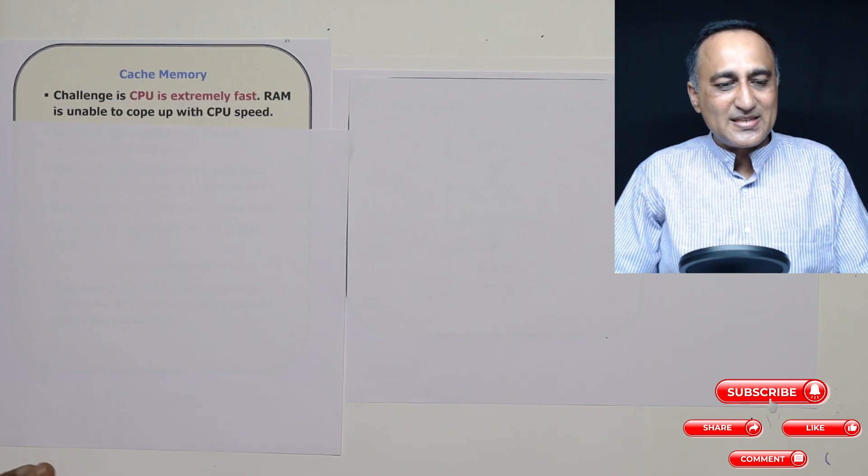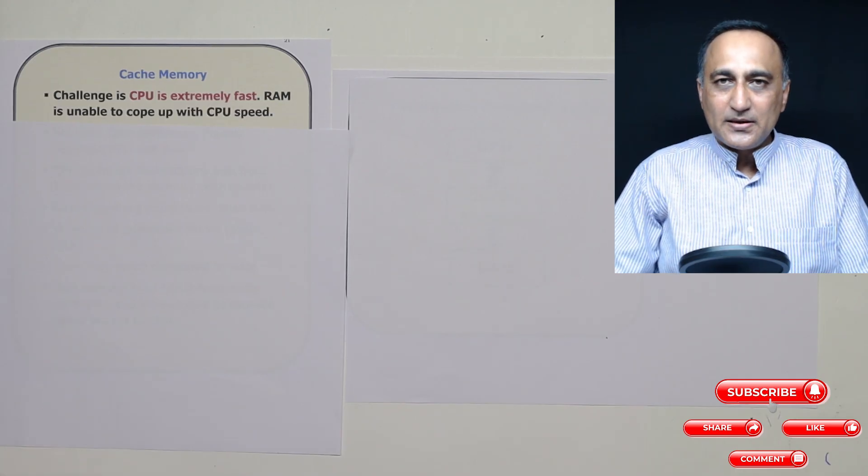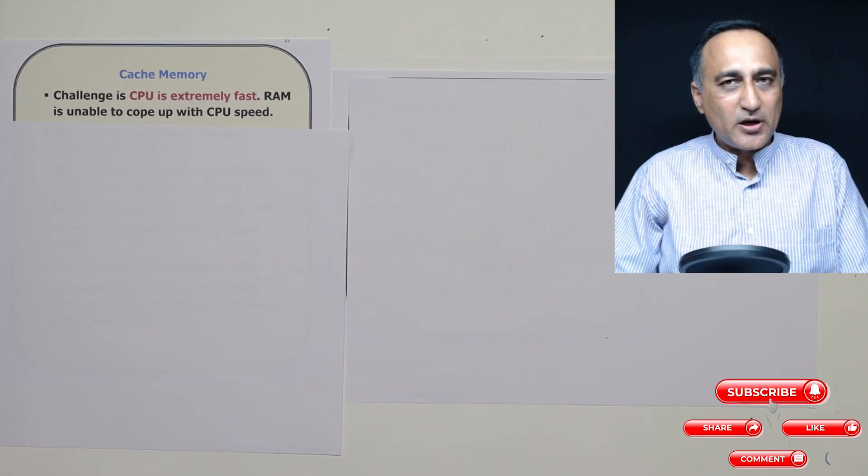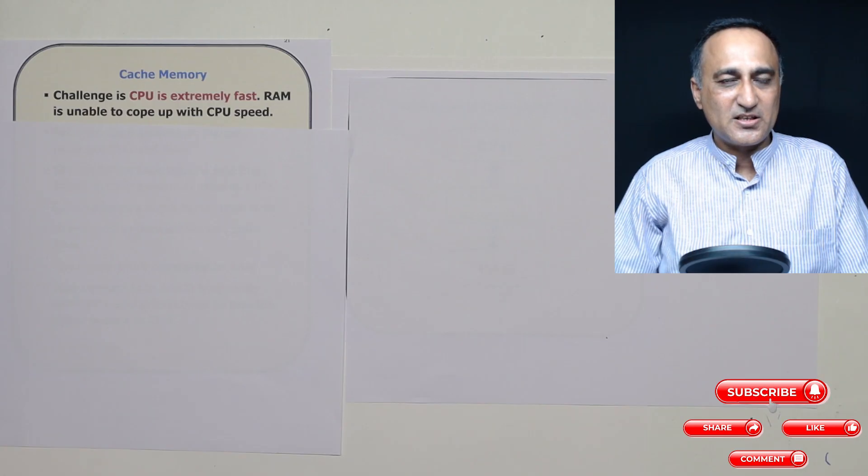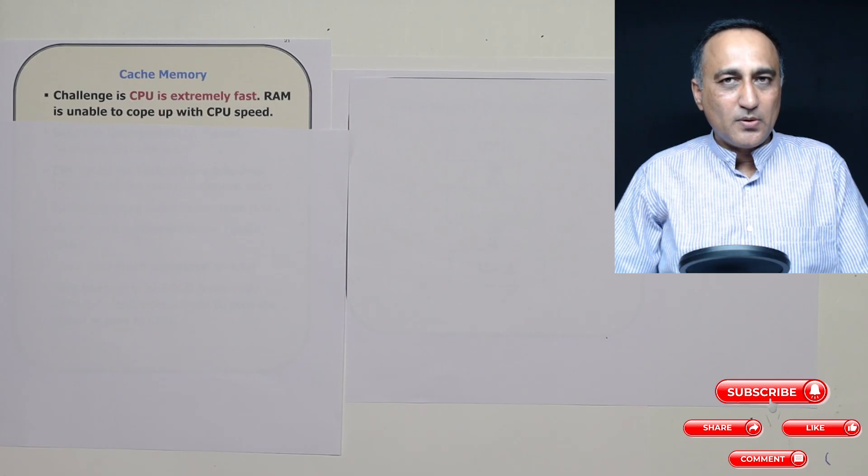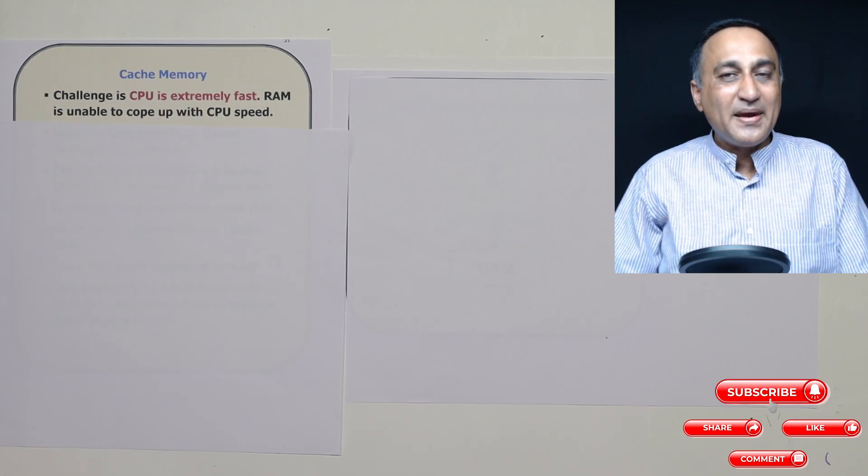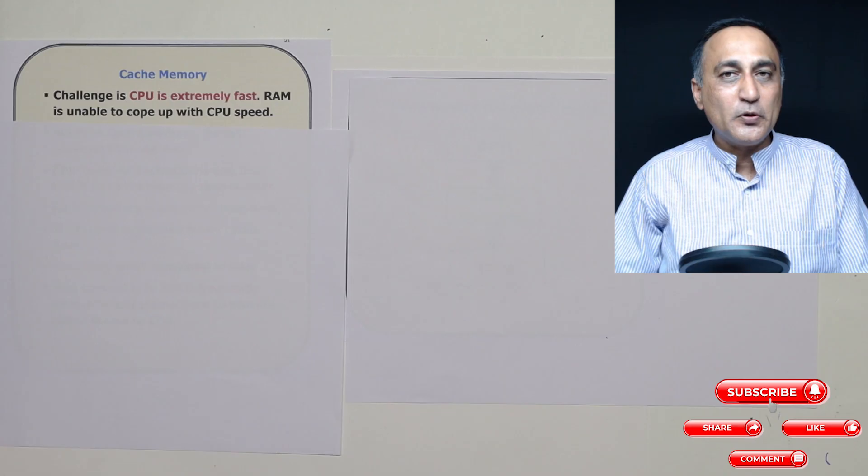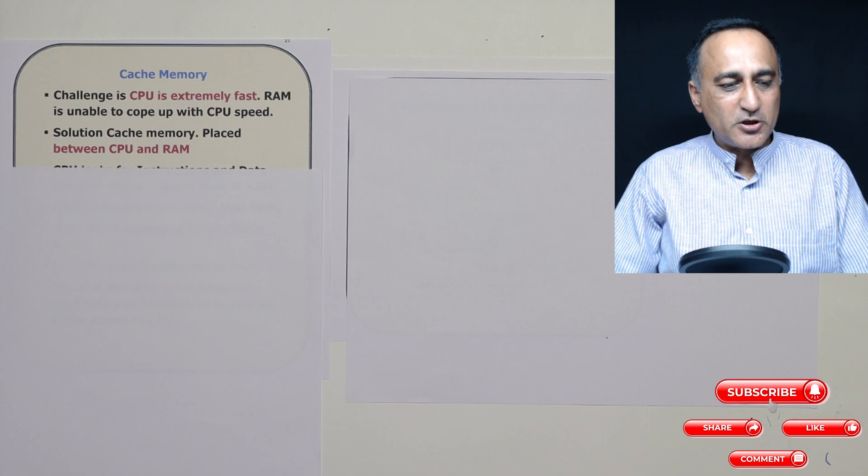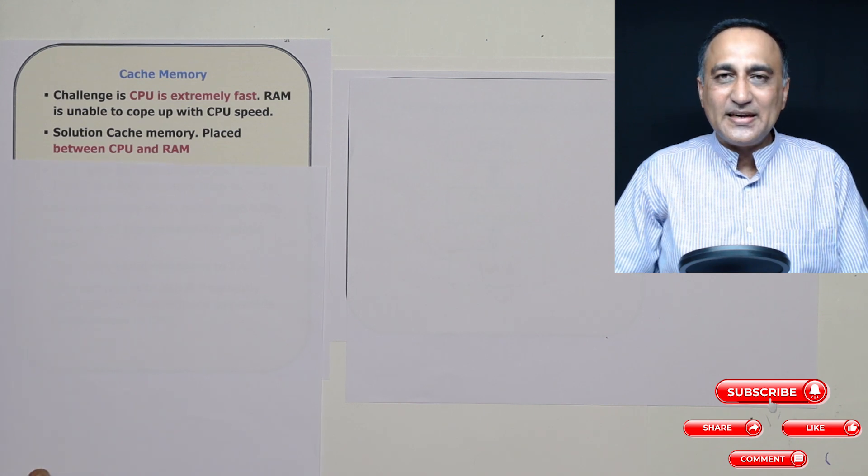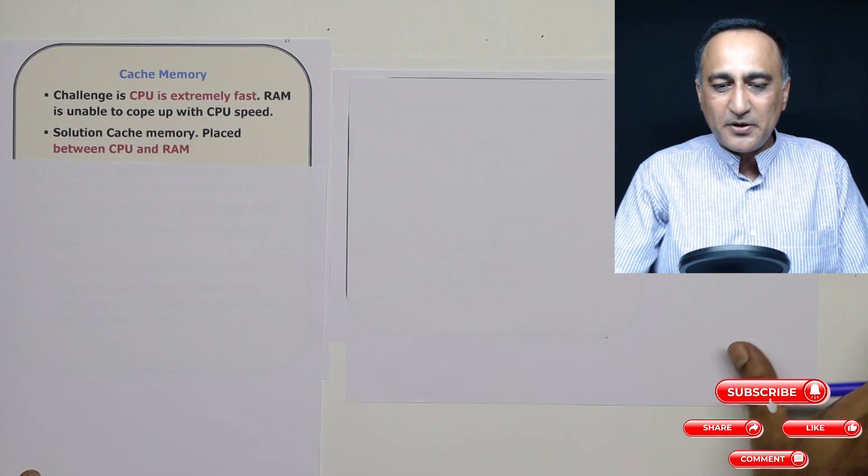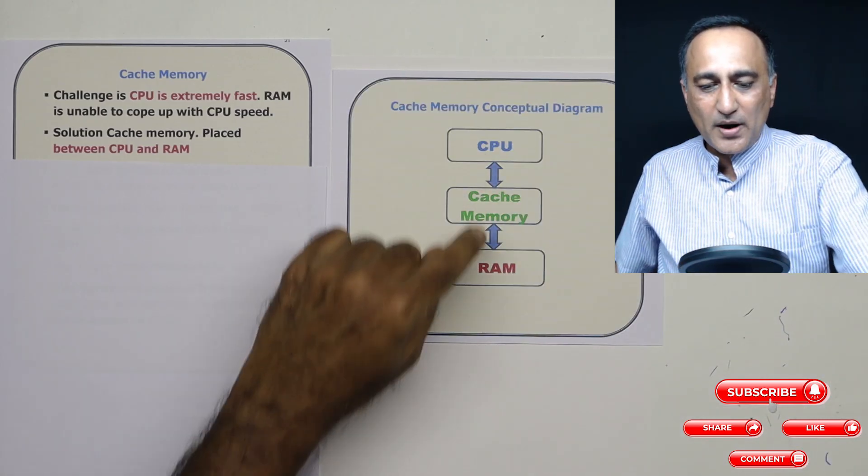Now what happens is since the CPU is extremely fast, the RAM, which is made up of dynamic random access memory, is not able to supply data and instructions at the required speed of the CPU. This way the CPU, being an expensive resource, may remain idle and the computer's performance may slow down. So there's a simple solution to it.